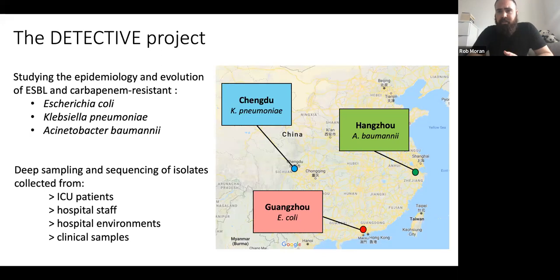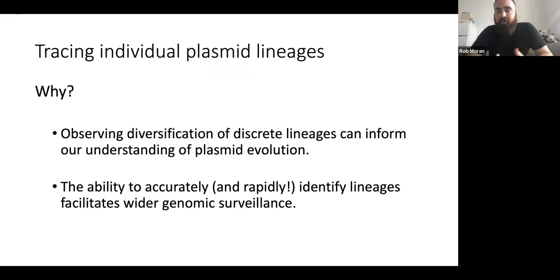For the past three years or so, I've been working on the Detective project, which is a UK-China collaboration involving universities of Birmingham and Cambridge and three institutes in China in three different cities. We're focusing on gram-negative pathogens in ICUs in these hospitals. Basically each project has been a deep sampling project, sequencing lots of isolates from ICU patients, staff, hospital environments, and clinical samples. My role in the project primarily has been to look at plasmids and other mobile genetic elements that are contributing to carbapenem resistance, but also to antibiotic resistance more generally in these strains, particularly where we see the accumulation of drug resistance.